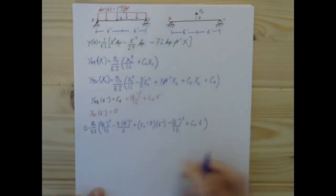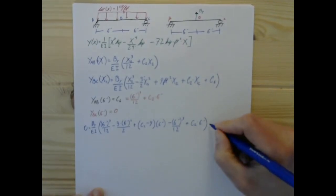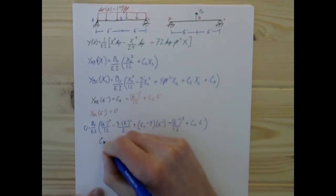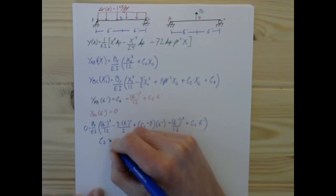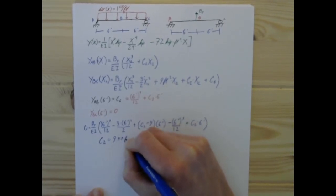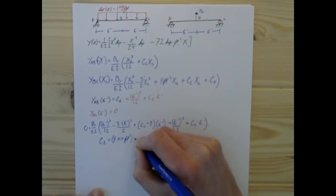plus whatever C2 is again times 6 feet, and that is all going to, you know, I will yada yada this point. And that's going to tell us that C2, after all that, is just 9 kip feet.